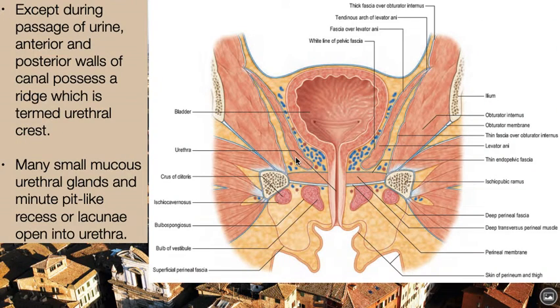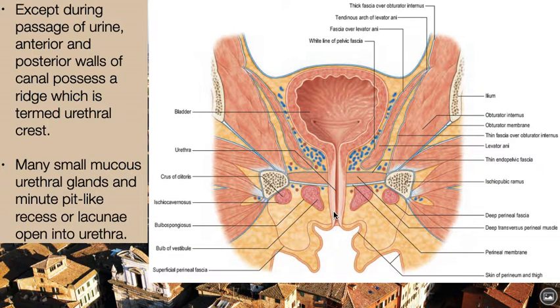Except during the passage of urine, the anterior and posterior walls of the urethral canal possess a ridge which is termed the urethral crest.